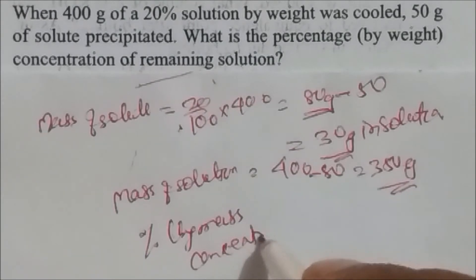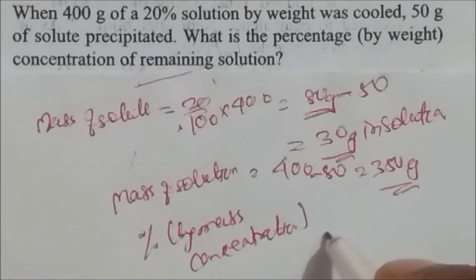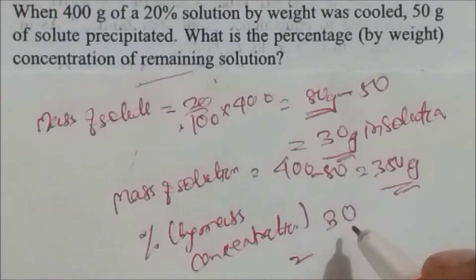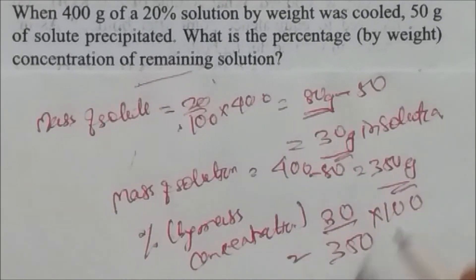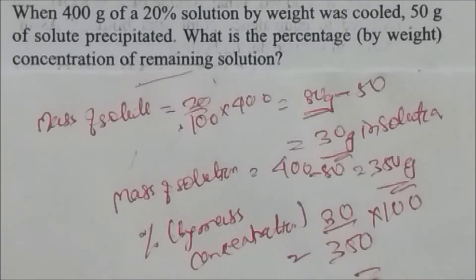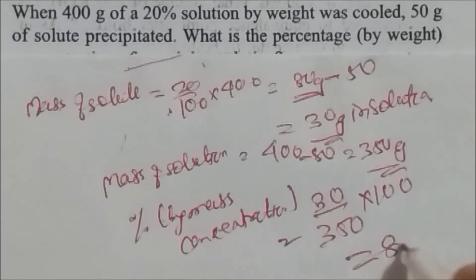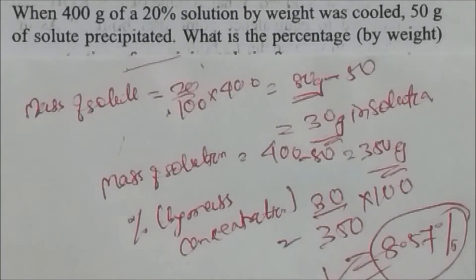Percentage concentration by mass = (solute / solution) × 100 = (30 / 350) × 100 = 8.57%. This is the answer.